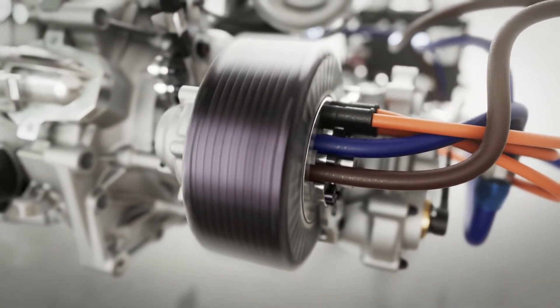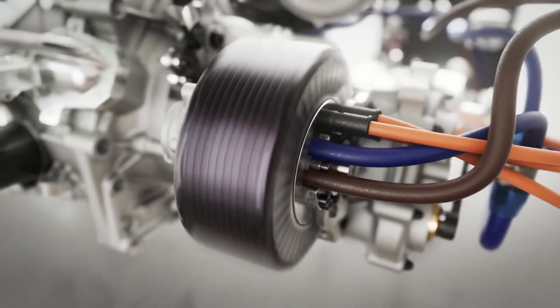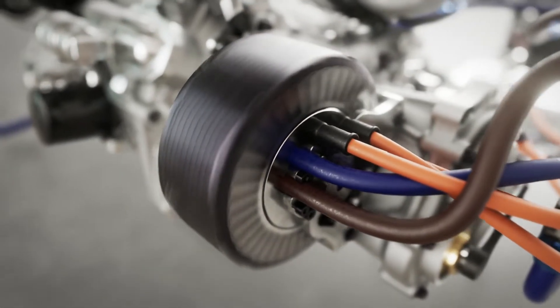When the clutch is engaged, it will spin as fast as the engine, which has a rev limit of 7,000 RPM. Still with me? Good.